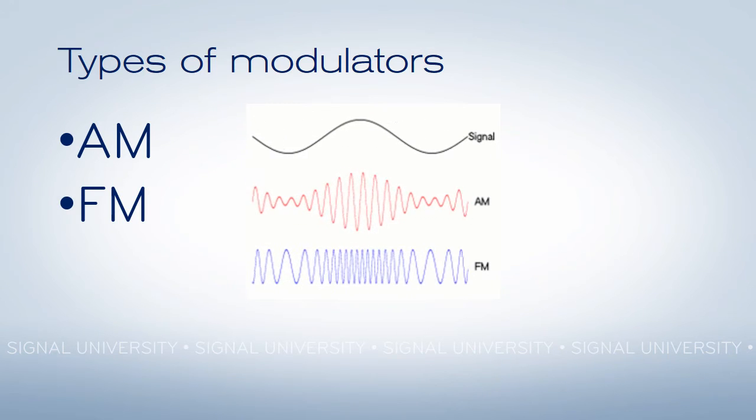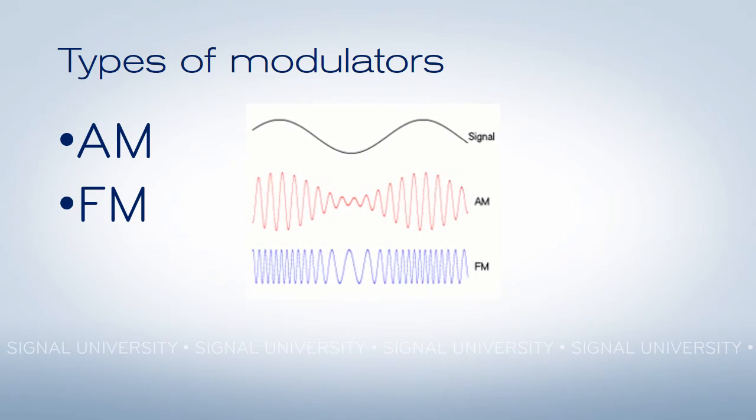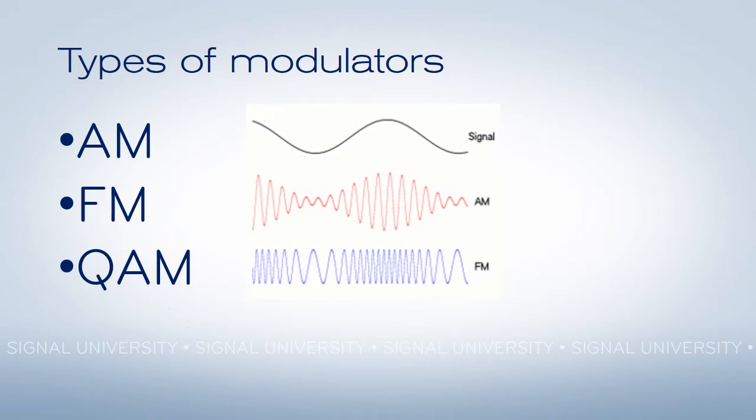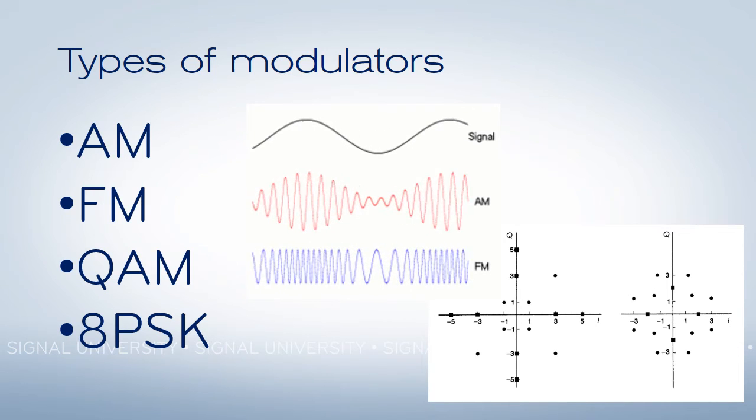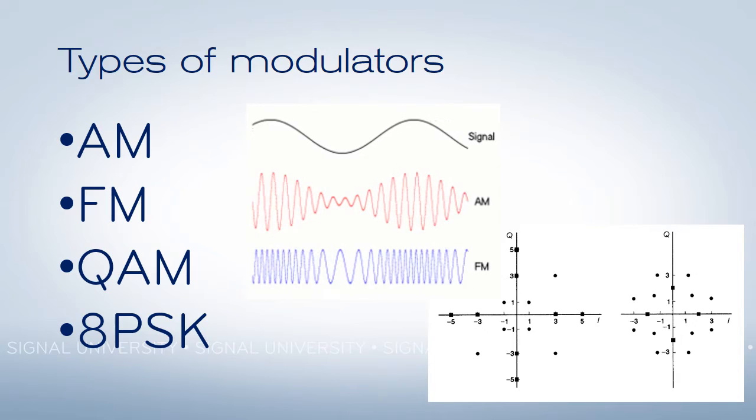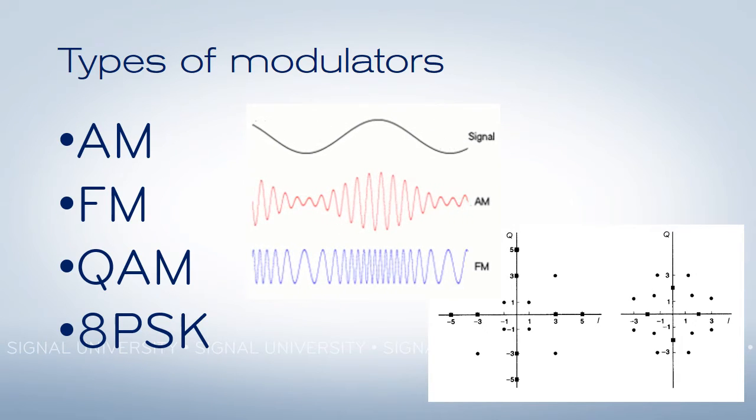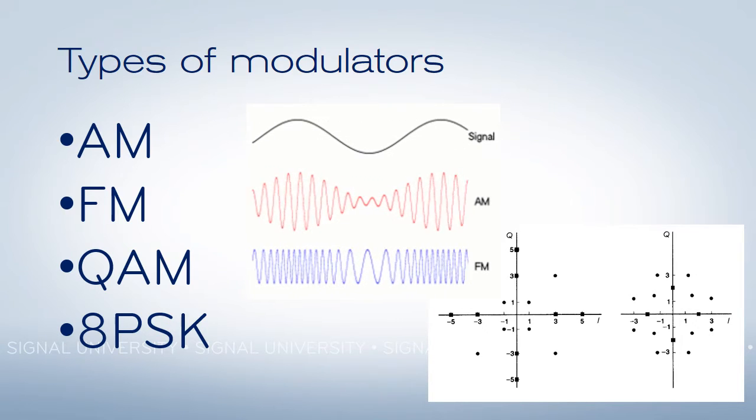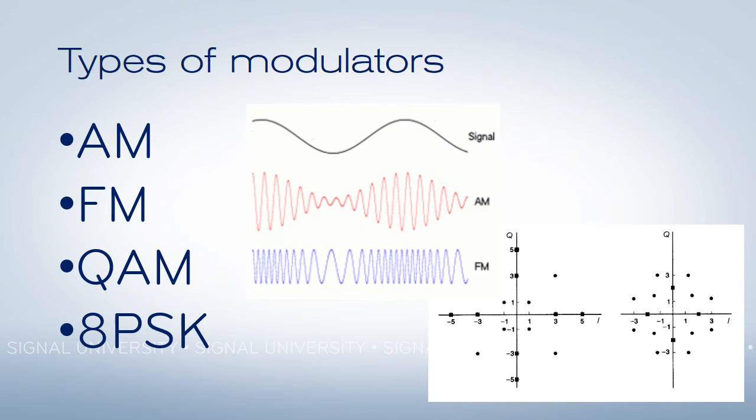The other two, QAM and 8PSK, are actually digital signals where a wave spins around in 3D space, and its position in 3D space as it's coming towards you determines its digital profile. The picture that you see is just one way of trying to understand that digital wave. It's really not designed for humans to understand. It's really only designed for computers.